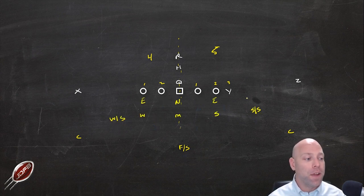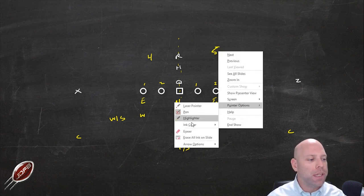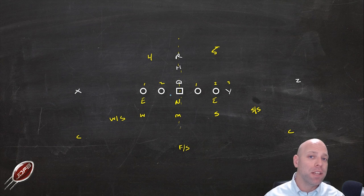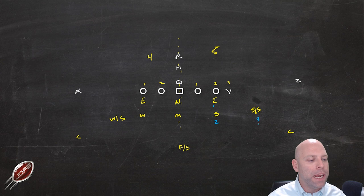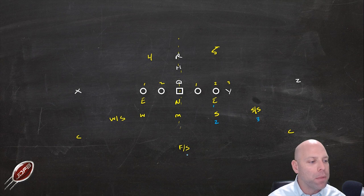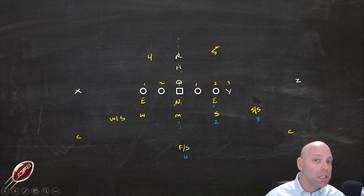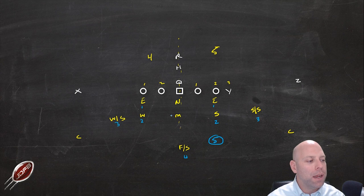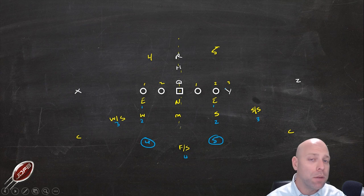Here's a 3-3-5 stack defense — the same counting process applies to an odd front. The nose and the Mike linebacker, being head-up on the center, each count as a half to each side. Our free safety is shaded to the strong side with the tight end over there. Counting the strong side gives us four and a half to five defenders. The weak side gives us four defenders. So that's how we use counting to make sure we're balanced with an odd front formation.